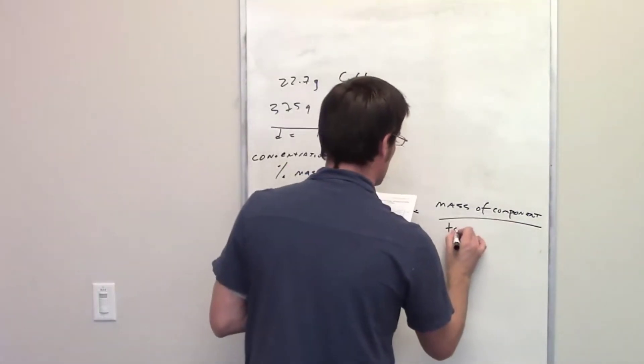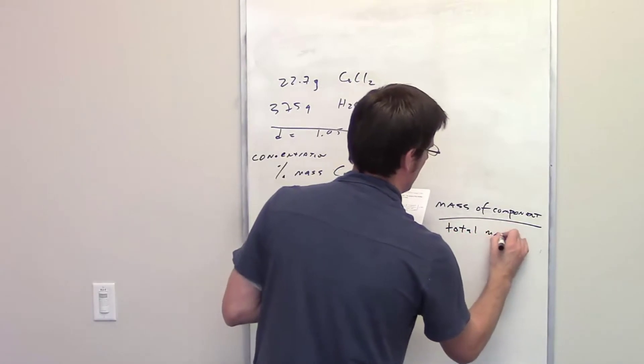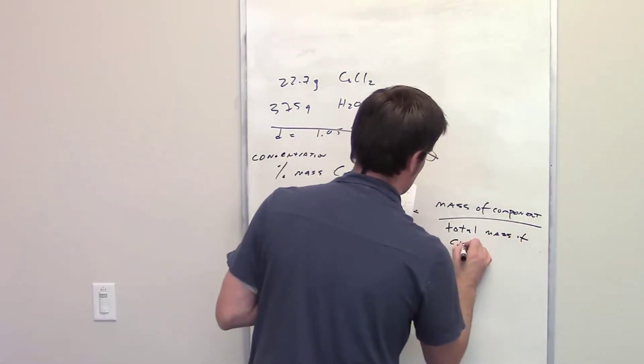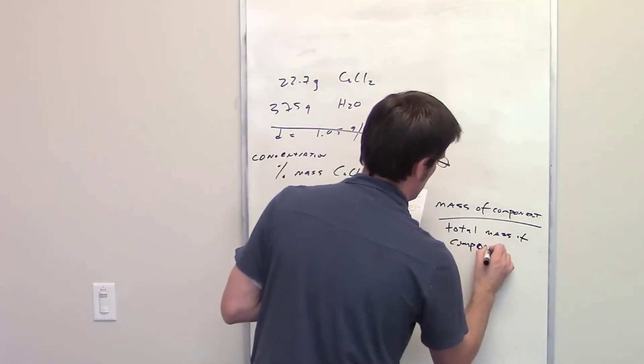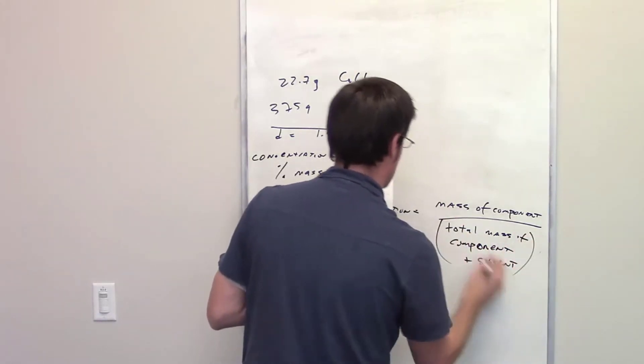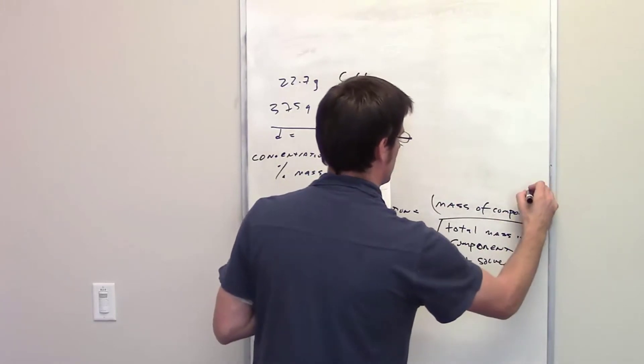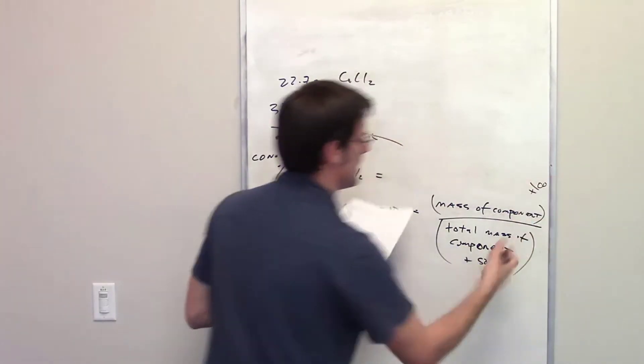So mass of component divided by the total mass of component in question, which in this case is going to be the solute component plus the solvent. And then you take that and times it by 100.